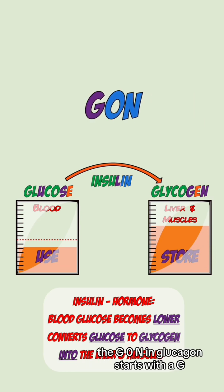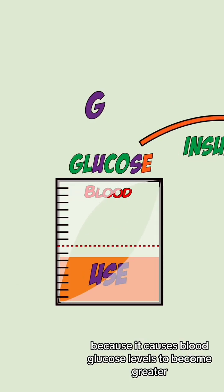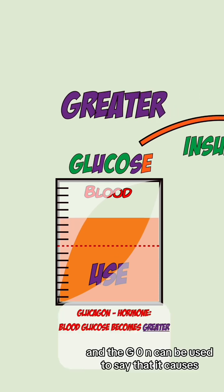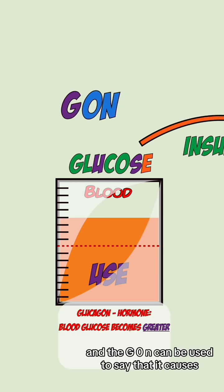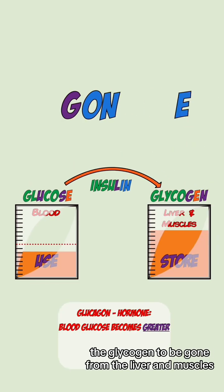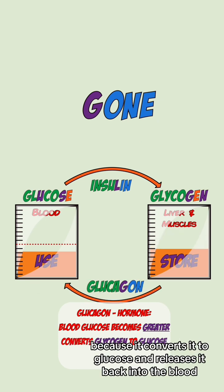The 'gon' in glucagon starts with a g because it causes blood glucose levels to become greater, and the 'gon' can be used to say that it causes the glycogen to be gone from the liver and muscles, because it converts it to glucose and releases it back into the blood.